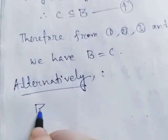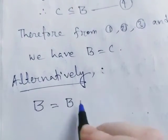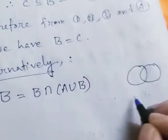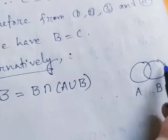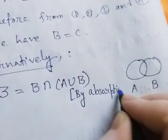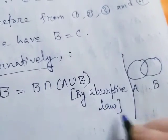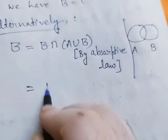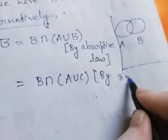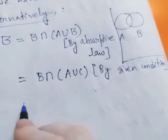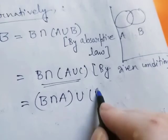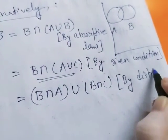Alternatively we can show B equals C. We know B equals B intersection (A union B) — because if A is one set and B is another, A union B intersection B is obviously B — this is known as the absorptive law. Now we apply B intersection (A union B) and substitute A union B equals A union C by the given condition. Applying the distributive law, this equals (B intersection A) union (B intersection C).